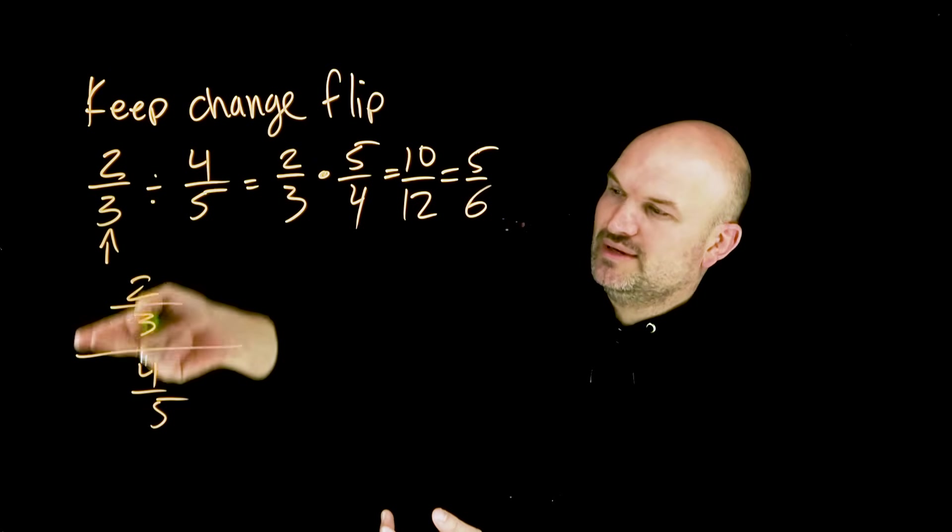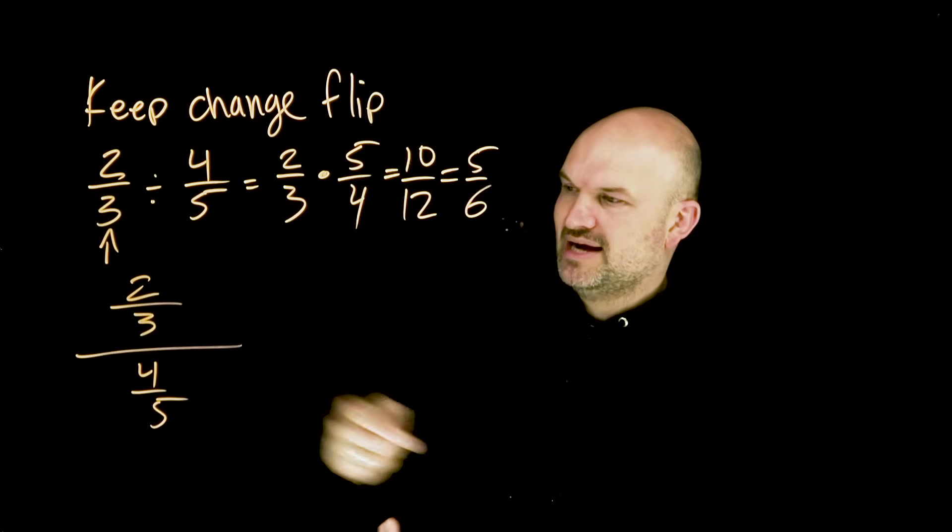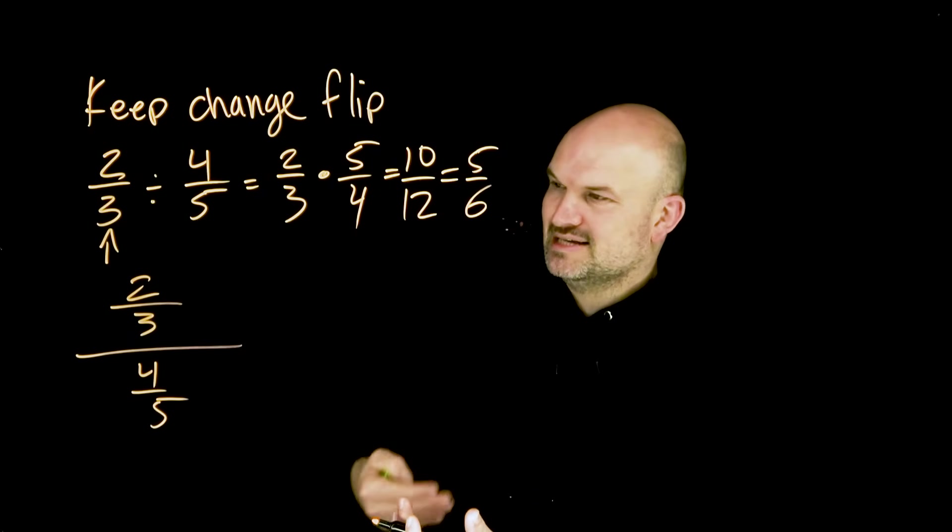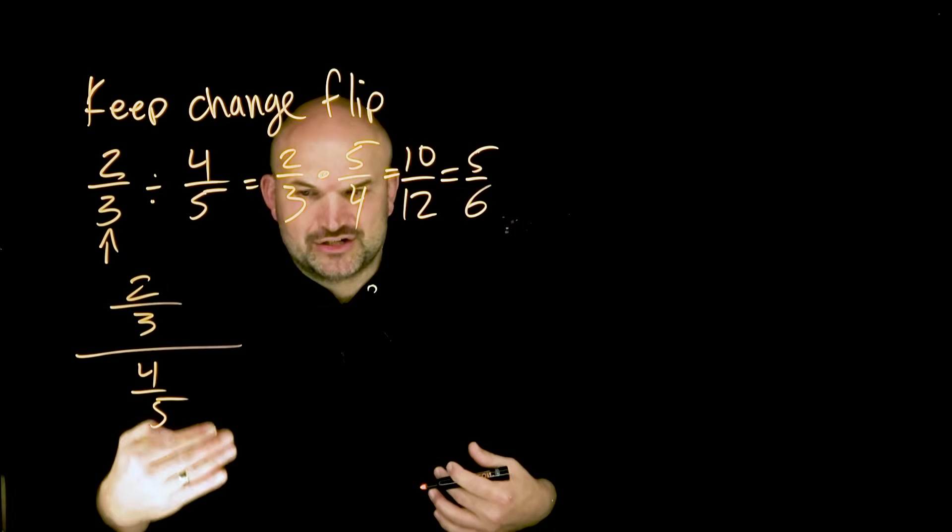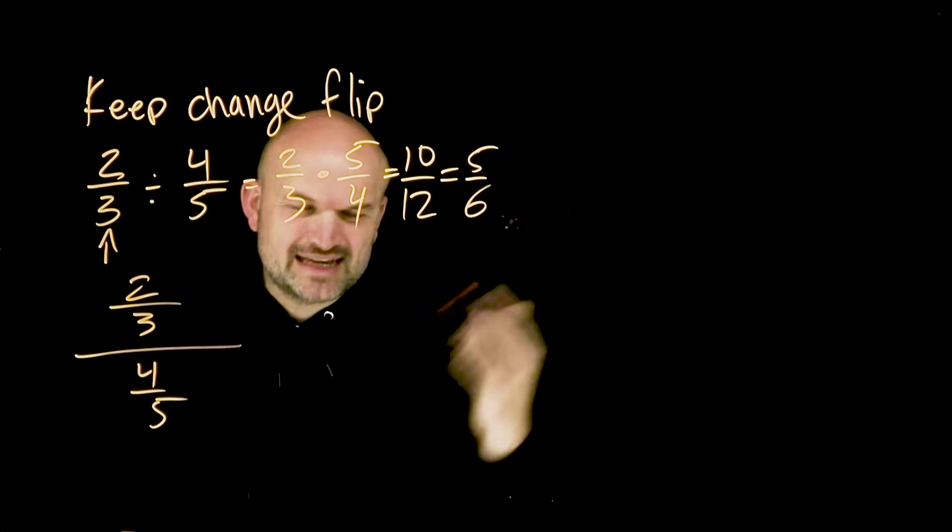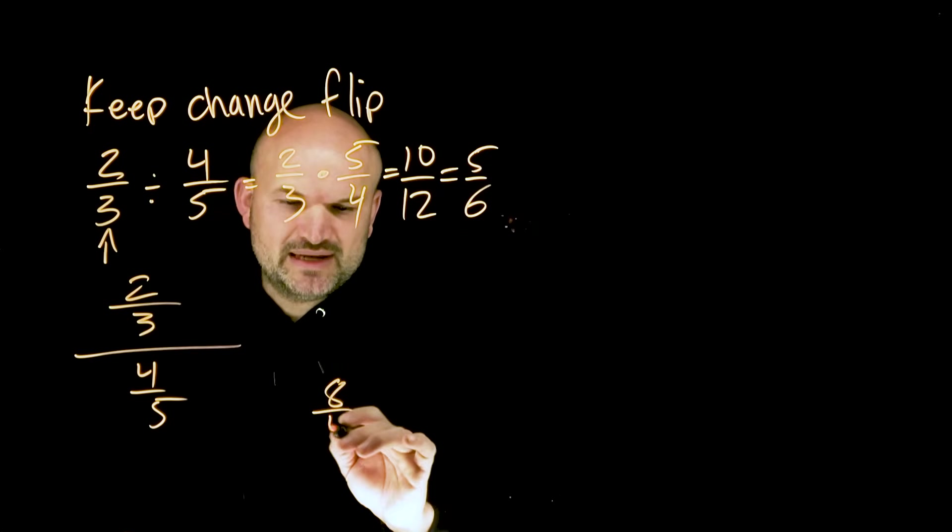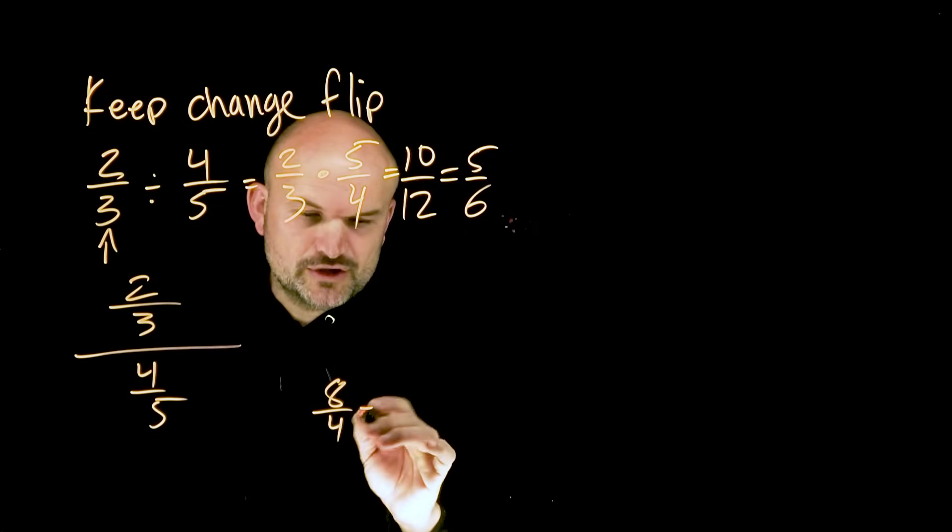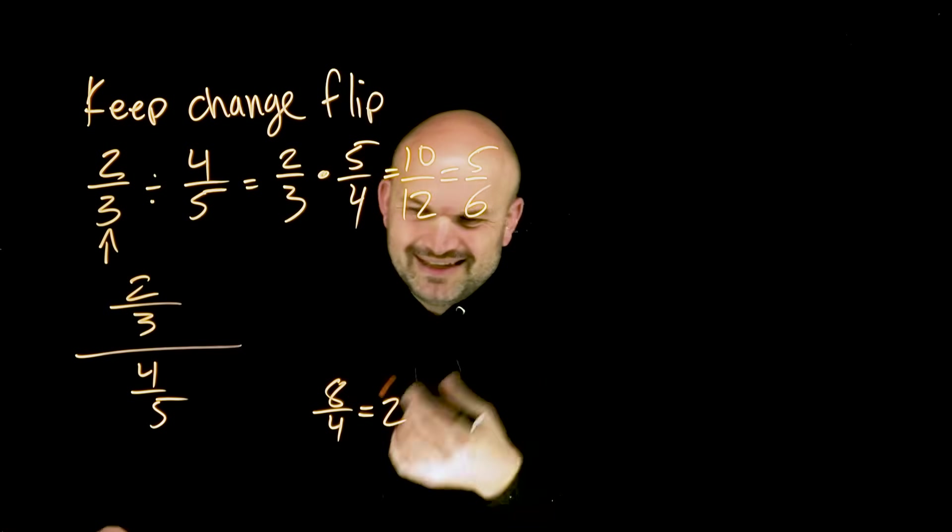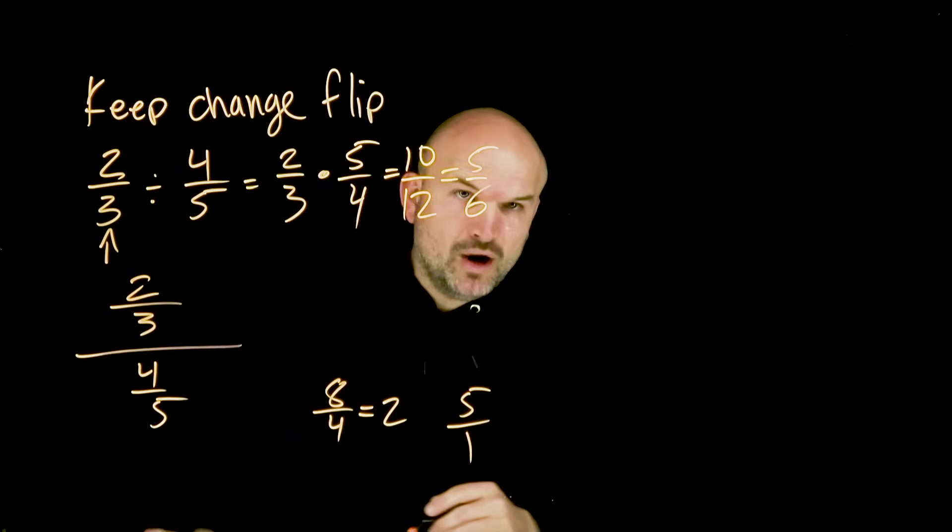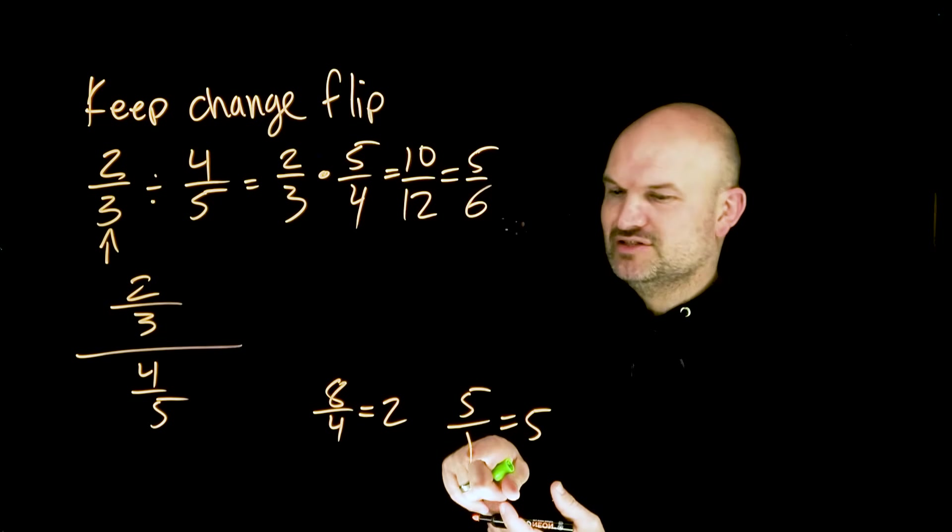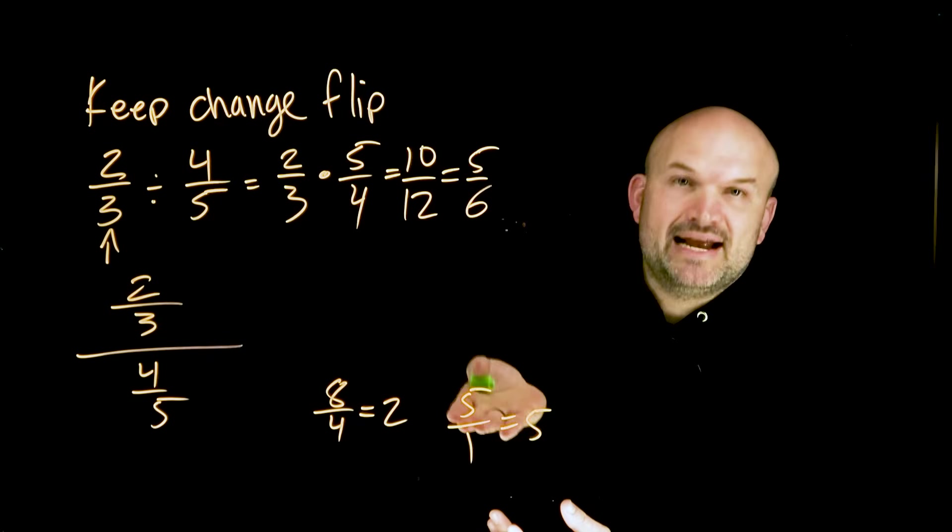So remember that we can always go ahead and rewrite a division problem. Instead of using the division symbol, we can also use a fraction bar. So now we have a fraction divided by another fraction. Now, the way that I always approach this, because I want students to be able to visually see this, we have a fraction divided by a fraction. Now, there's a couple different ways to be able to get rid of a fraction. One is we could have a number in the denominator that evenly divides into our numerator. So four evenly divides an eight, two times. Or even more simply, if we had like a number five divided by one, then we know that one obviously divides into five, five times, right?